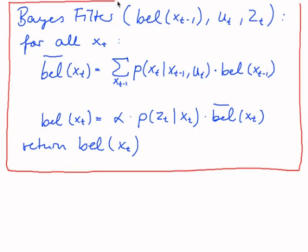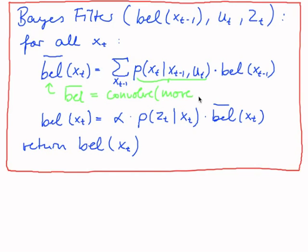And now when we want to program this, we don't have to do very much. We already did this. So this line here, this ends up being just a convolution. So programming this is just belief with the overline, convolution of our move distribution and our old belief distribution. While this step is just a multiply of the belief we just computed and our measurement.